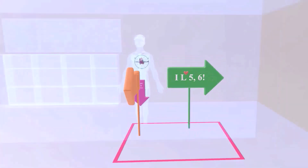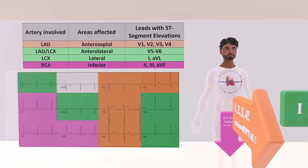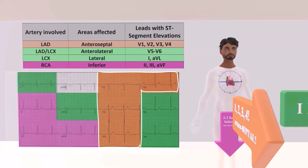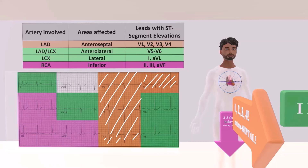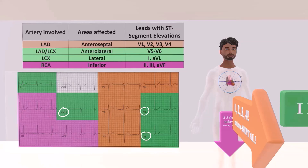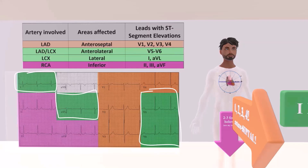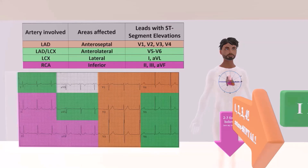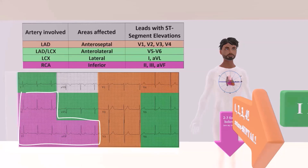To summarize: the left anterior descending artery infarction affects the anteroseptal myocardium, corresponding to changes at V1, V2, V3, and V4 — the orange part of the ECG. A lateral infarction associated with the lateral circumflex shows changes in leads 1, AVL, V5, and V6 — the green portions. An inferior infarction associated with the right coronary artery shows changes in leads 2, 3, and AVF — the magenta part.